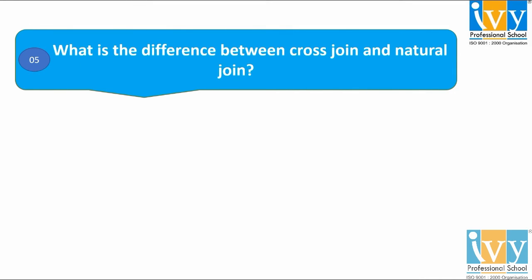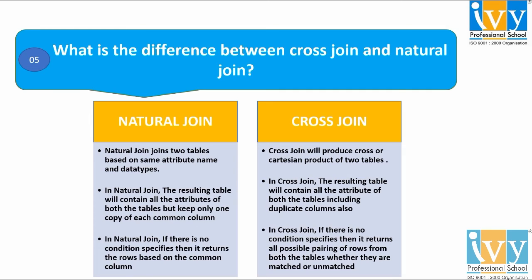The next question asks: what is the difference between a cross join and a natural join? The first point of difference is that a natural join joins two tables based on the same attribute name and data types, whereas a cross join will produce the cross or cartesian product of the two tables. The second point of difference is that in a natural join, the resulting table will contain all the attributes of both tables but keep only one copy of each common column. On the contrary, in a cross join, the resulting table will contain all the attributes of both tables including duplicate columns as well.